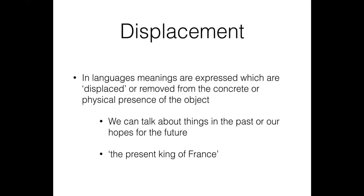The second design feature is displacement. The fact that we can talk about things that will happen in the future or happened in the past — that space and time continuum that human language can express — that's what we call displacement. Animals cannot do that. Animals cannot communicate about the past or the future because they always live in the present. If they bark, it's about something they want right now — 'I'm hungry right now,' 'I need to go out right now.'